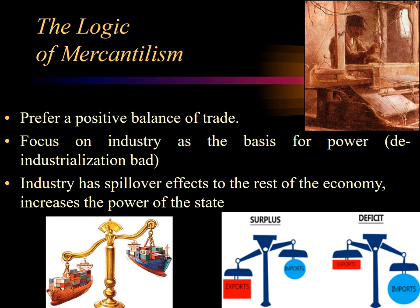Nationalists believe that industry has spillover effects to the rest of the economy, such as social mobilization and education, that increase the power of the state. Some states attempt to obtain both. This is what Japan is accused of — it has access to the international system of free trade to make exports and obtain resources, while simultaneously protecting its own domestic market from foreign imports. It does this not only with tariffs, which are actually quite low, but with invisible barriers related to health regulations and the tendency of Japanese people to prefer domestic goods rather than foreign exports.